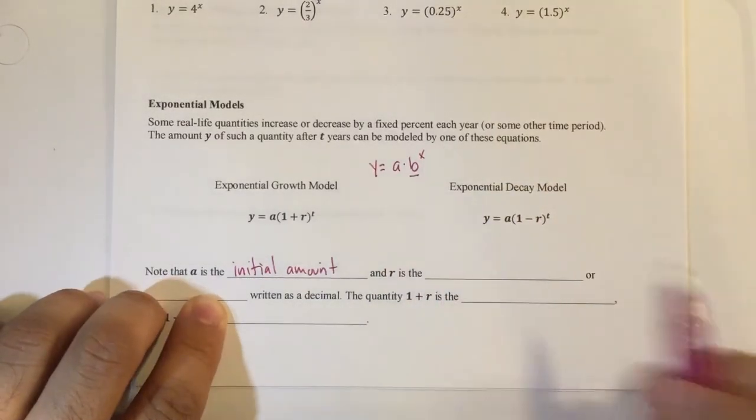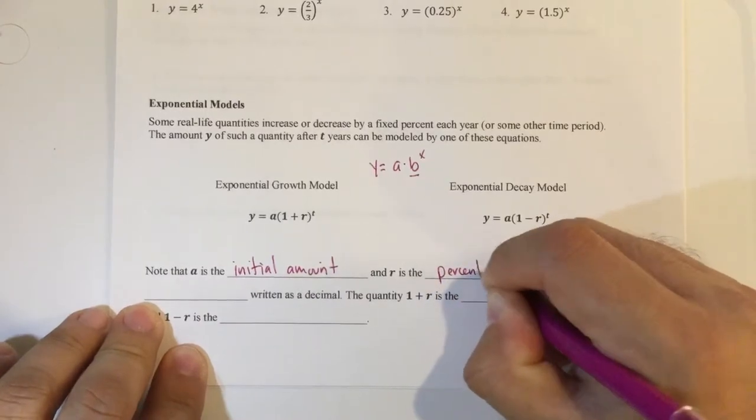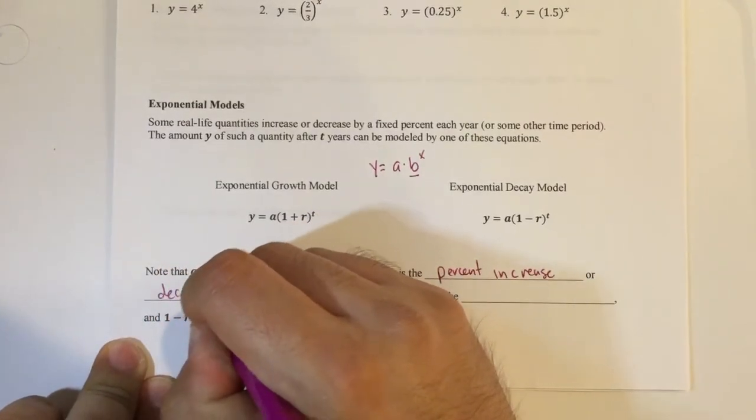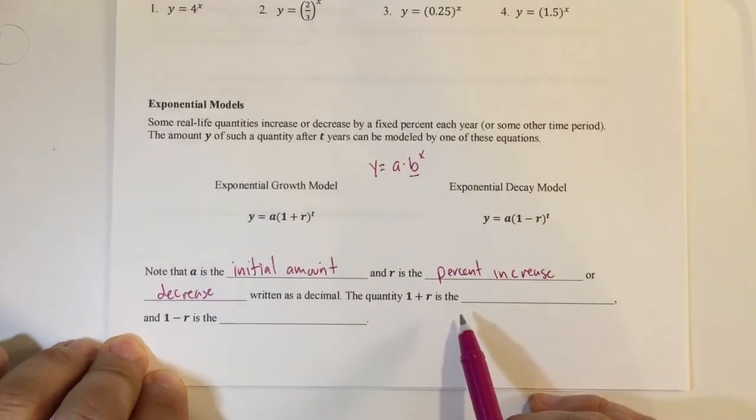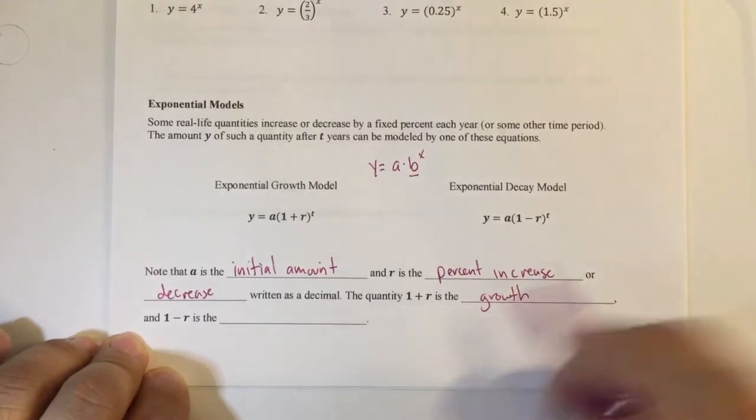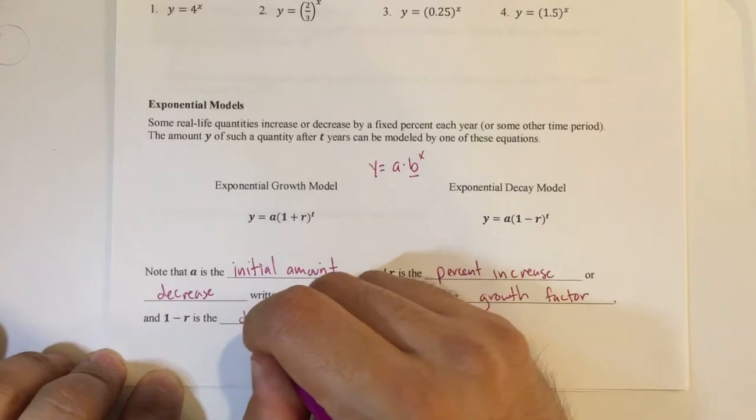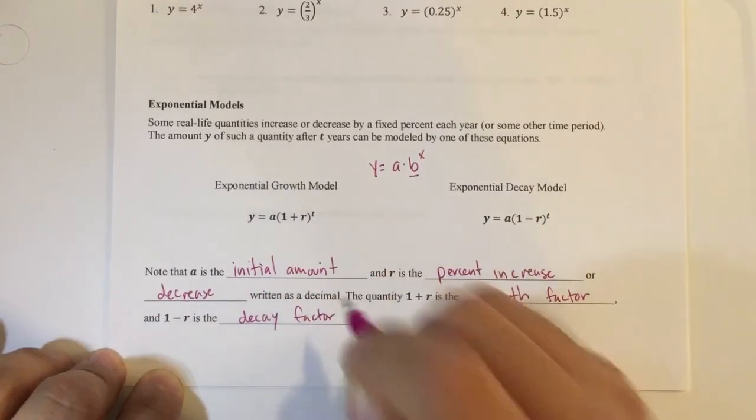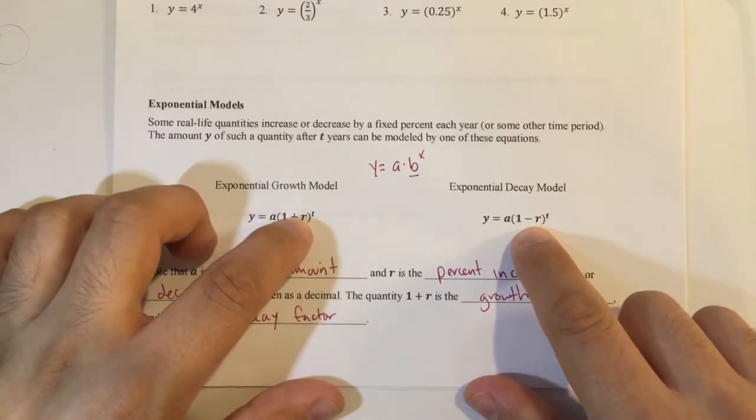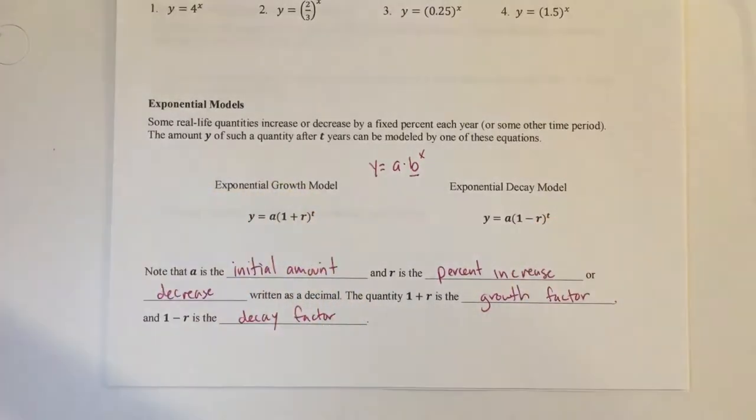Okay, r is the percent increase or decrease written as a decimal. The quantity 1 plus r is the growth factor, which means it's getting bigger. Therefore, 1 minus r is our decay factor. So notice a is your initial amount, 1 plus r and 1 minus r, that is going to be your growth factor here and your decay factor. t is time. Okay, so those are the two equations.